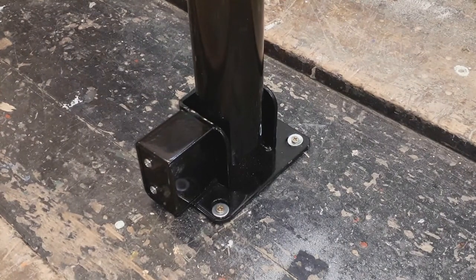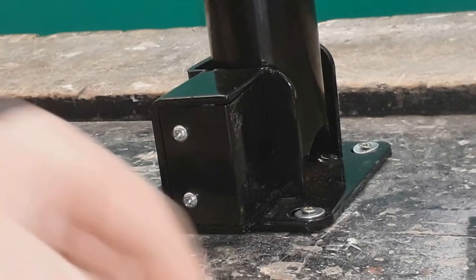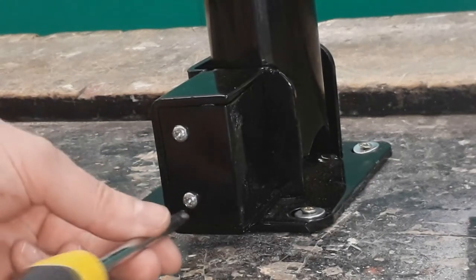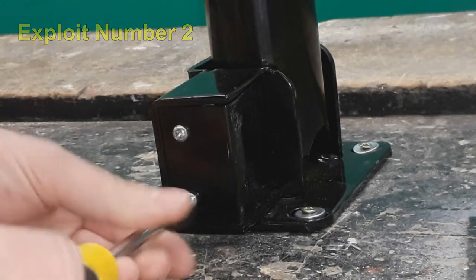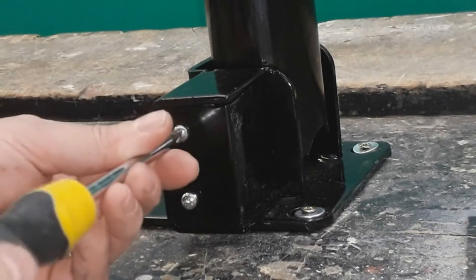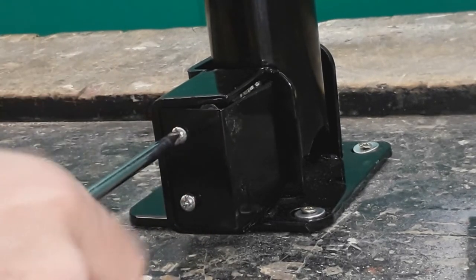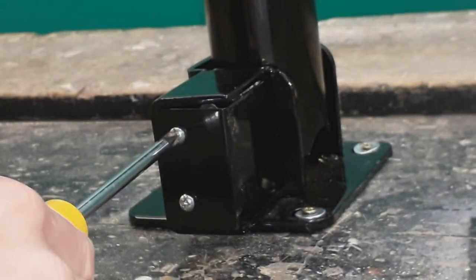Get ready for exploit number two. Okay, here we go. So for exploit number two, all we need to do is simply, because this is just cross head screws, we just need to undo this. Undo this. Maybe just a little bit more.